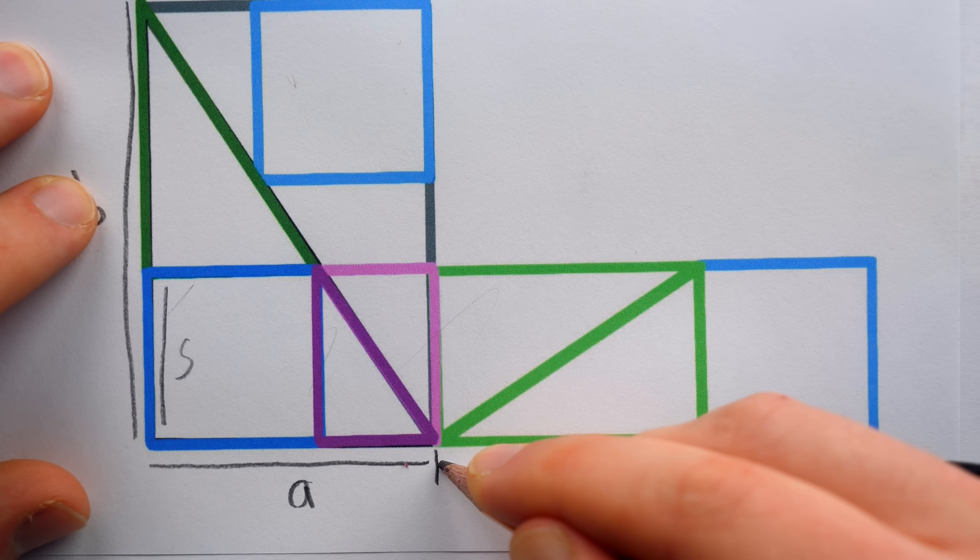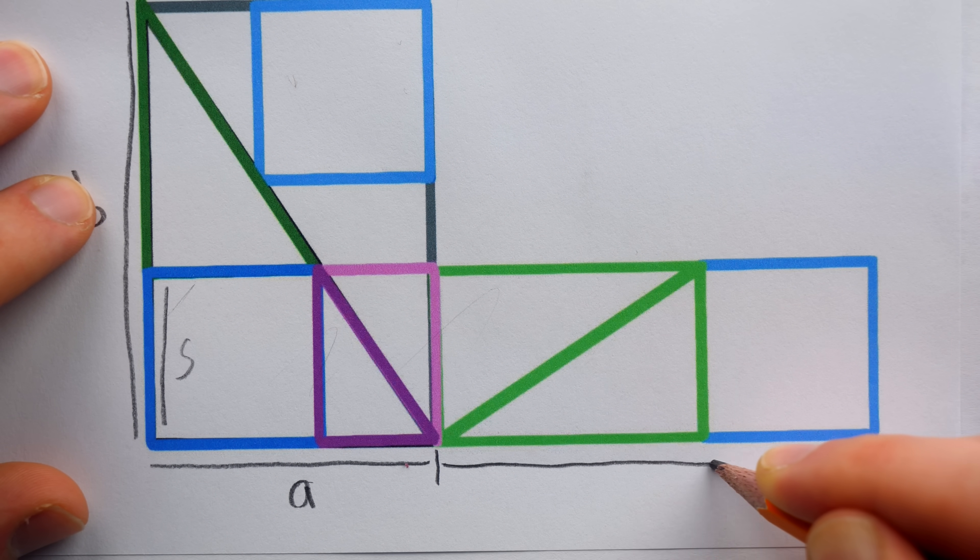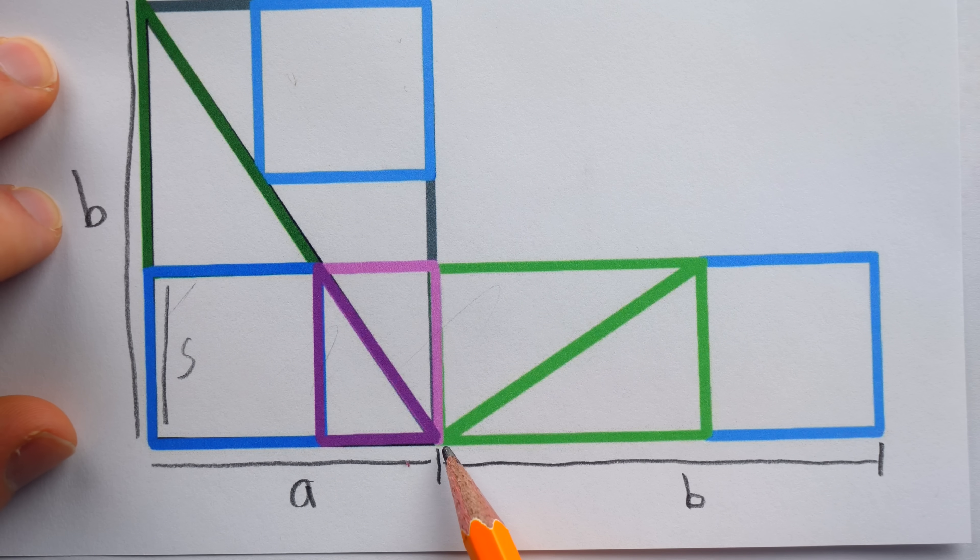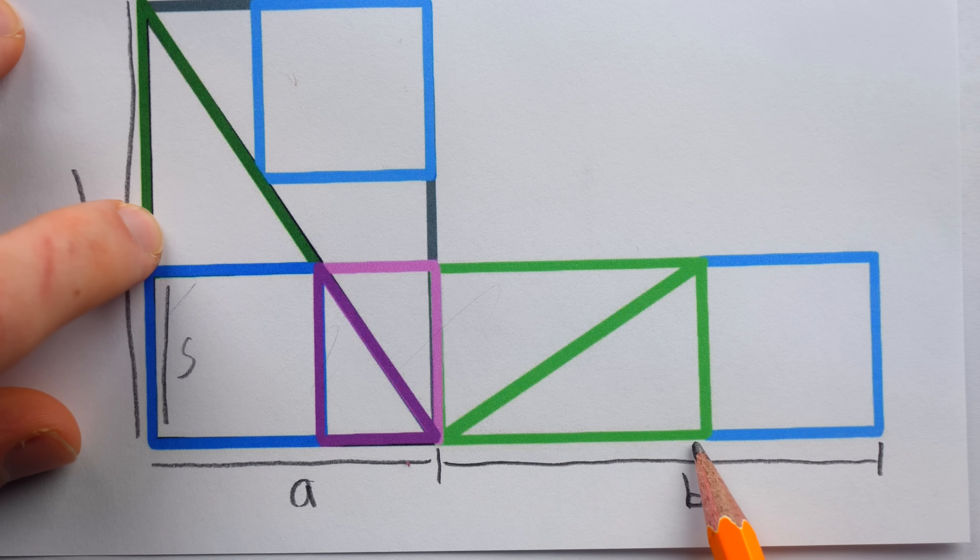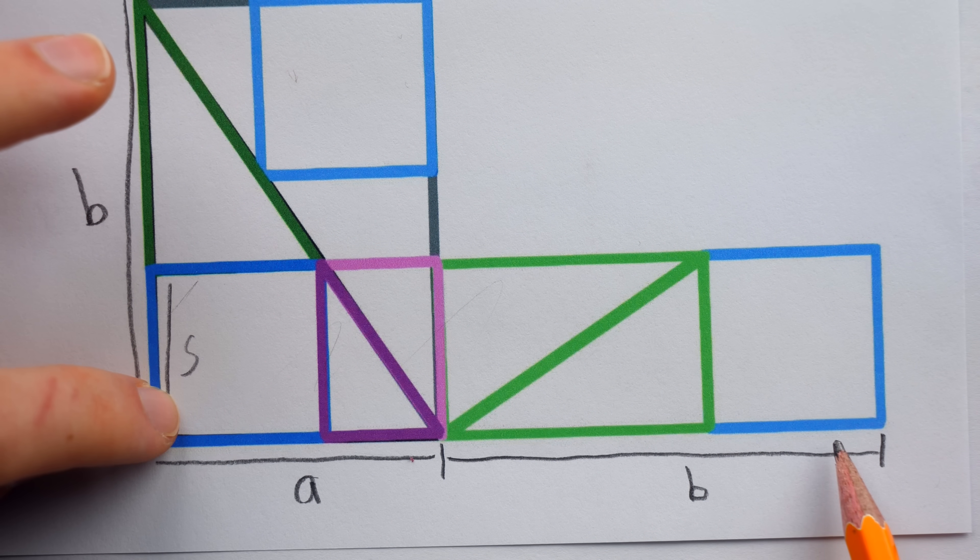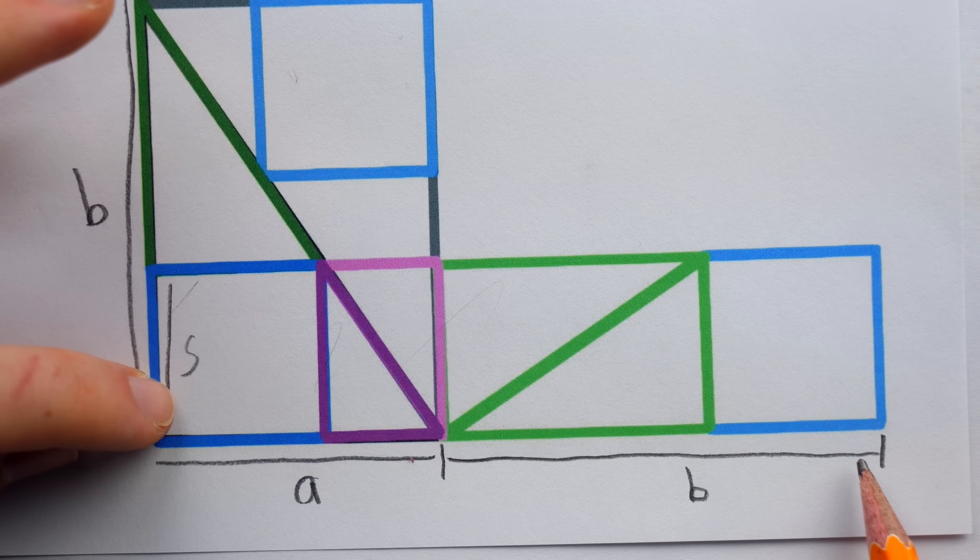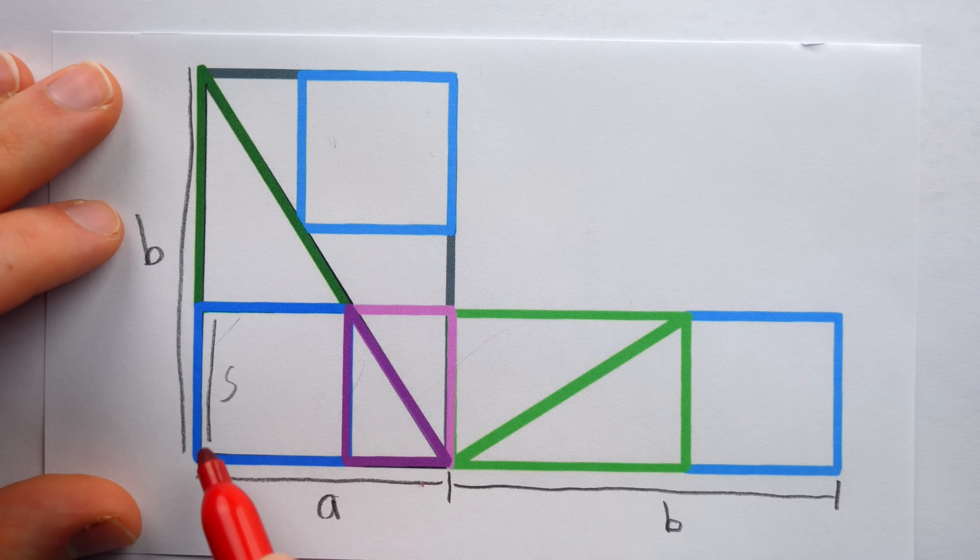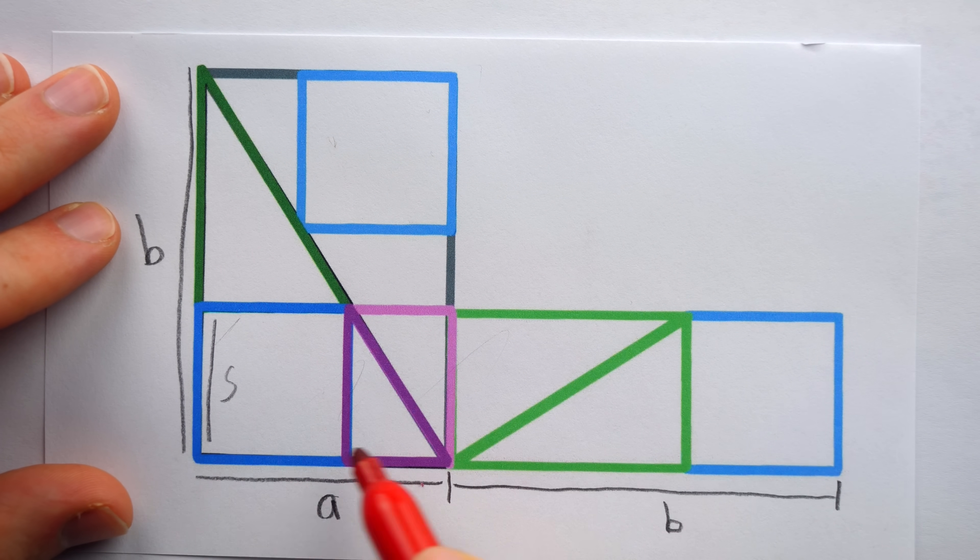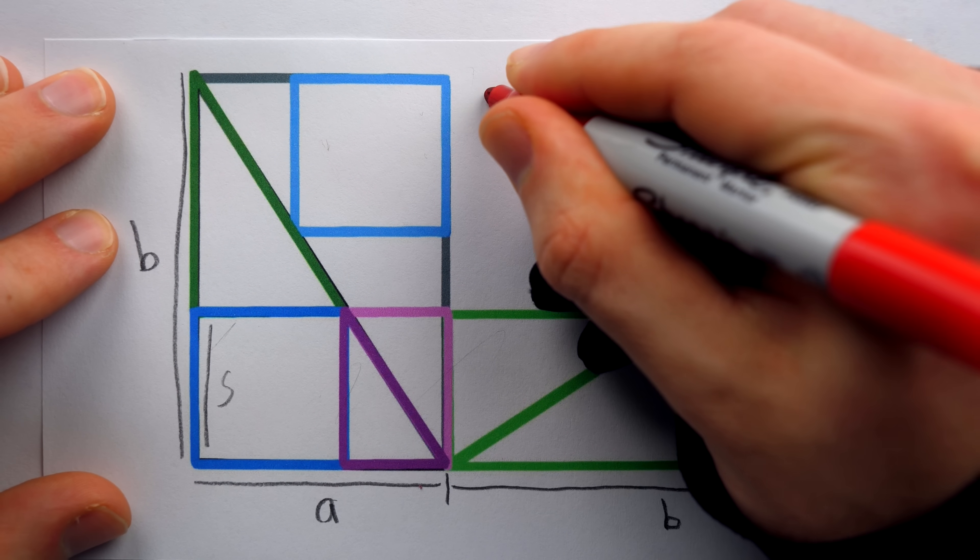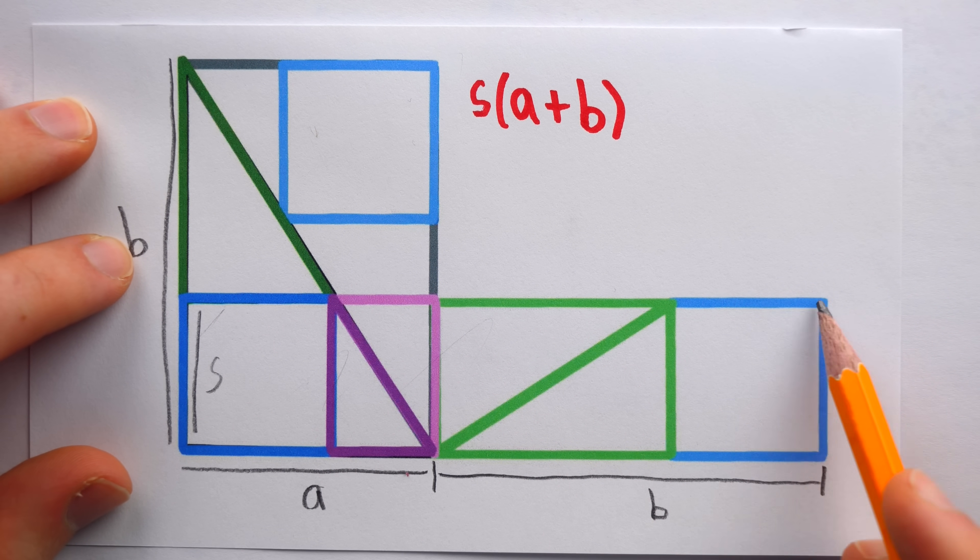And hopefully, you can see that the amount we have extended its length with these extra pieces is, in fact, B. Because it's the height of this green triangle plus a side length of the square, which, of course, is B. Hence, it's certainly the case that the area of this long rectangle is height times base, so S times A plus B. And what is this long rectangle made up of?